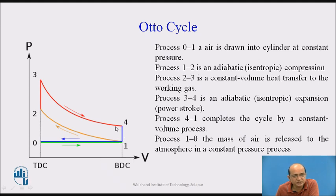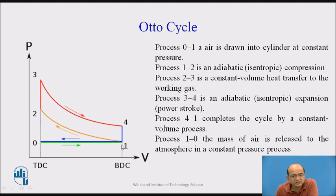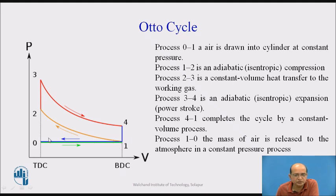Process 4 to 1 is the heat rejection to the atmosphere. The pressure drops to atmospheric pressure as the gases are exhausted from the cylinder. The remaining burnt gases are expelled in process 1 to 0 — the mass of air is released to the atmosphere at constant pressure, as the piston moves from bottom dead center to top dead center.